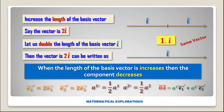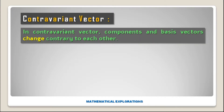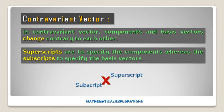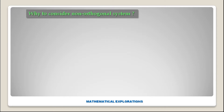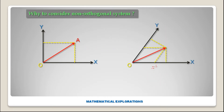Then the vector OA can be written as OA equals A¹-prime·E1-prime plus A²-prime·E2-prime. In a contravariant vector, the components and basis vectors change contrary to each other. We use superscripts to specify the components and subscripts to specify the basis vectors, as they change contrary to each other. If we consider an orthogonal system, we get only one type of projection — perpendicular projection. But in a non-orthogonal system, we get two types of projection: perpendicular and parallel. Here, x-upper-suffix-1 and x-upper-suffix-2 are contravariant components.